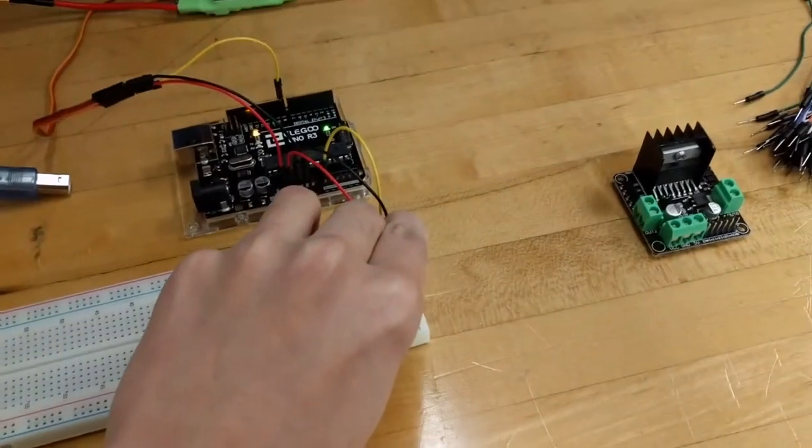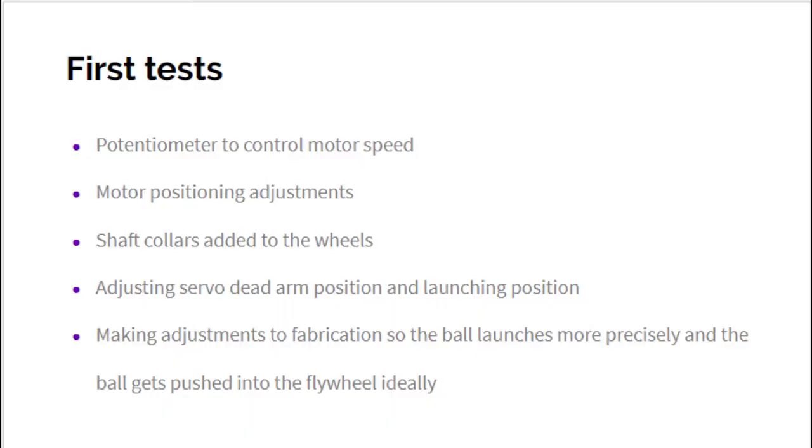Once we were able to get the ball to launch, we moved forward to getting our loading servo to push the ball into the contact path of our flywheels. We had to make minor adjustments such that the maximum angle of the servo arm wouldn't collide with the robot.